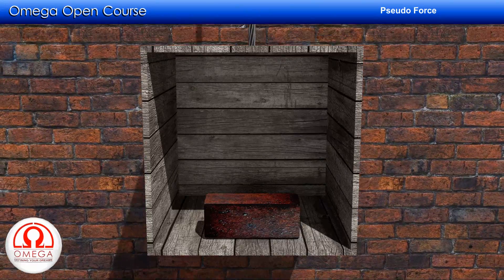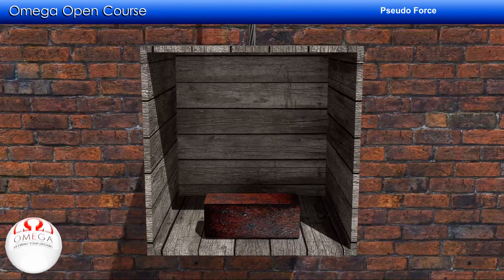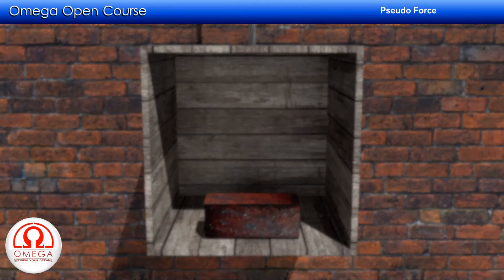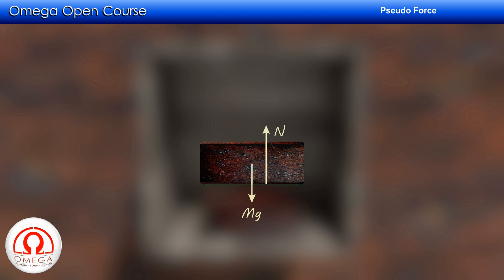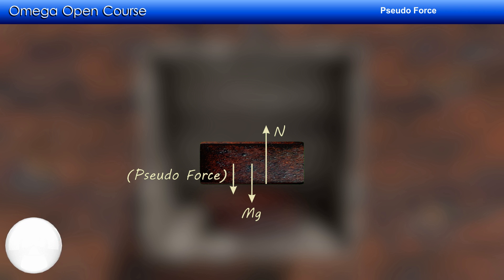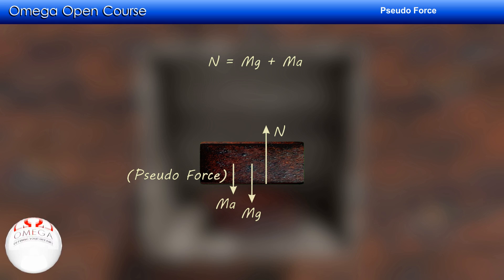Now let us look at the block with respect to the box. In this frame, the block appears to be at rest. The gravitational force mg acts downward and the normal contact force acts upward. Since our frame is accelerating and the acceleration of the frame is in the upward direction, the pseudo-force acts downward with magnitude MA. As the block is at rest, net force must be zero, so N equals mg plus MA.